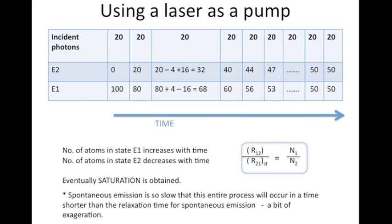Let's assume all these photons interact with the atoms in the medium. We have already proved that the constants for the rates of absorption and stimulated emission are equal. So the ratio of photons involved in absorption to those involved in stimulated emission equals the ratio of the number of atoms in the lower energy level to that in the higher energy level — considered as a time-averaged effect. Initially, all 20 photons will be absorbed because there are no atoms in the excited state, giving us 20 atoms in the excited state and 80 in the ground state.